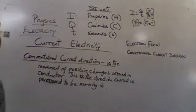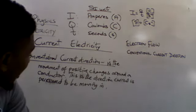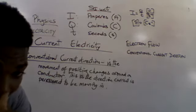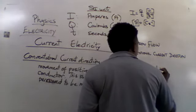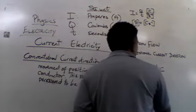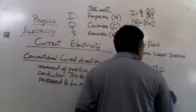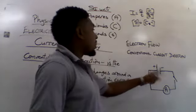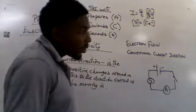Conventional current direction is the movement of positive charges around a conductor. This is the direction current is perceived to be moving in. In a simple circuit with a battery (positive and negative side), a bulb, an ammeter, and a switch, polarity refers to the different poles — positive or negative — when hooking up components. In a simple circuit, everything is connected positive to negative.